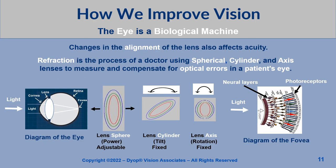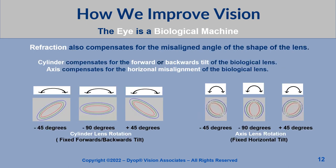Changes in the alignment of the lens also affect acuity. Refraction is the process of a doctor using spherical, cylinder, and axis lenses to measure and compensate for optical errors in a patient's eye. Refraction also compensates for the misaligned angle of the shape of the lens. Cylinder compensates for the forward or backward tilt of the biological lens.